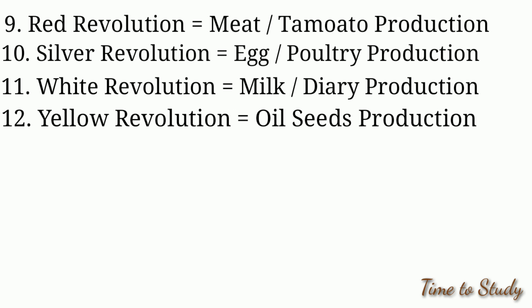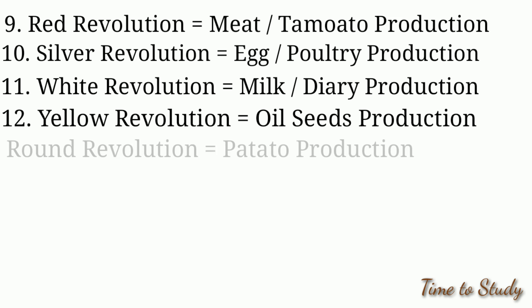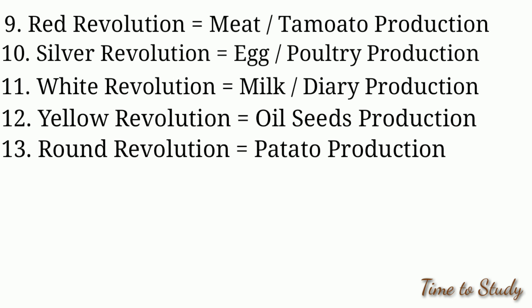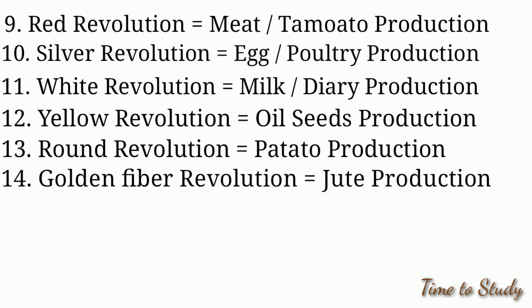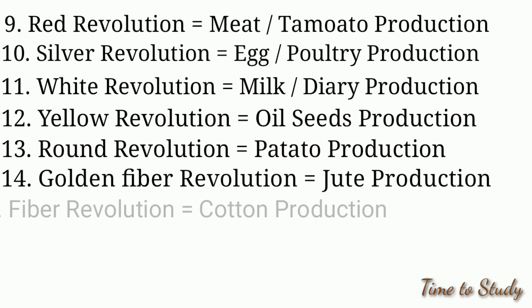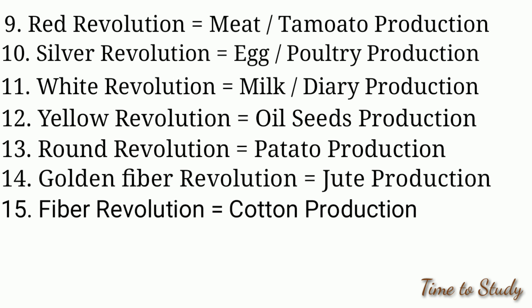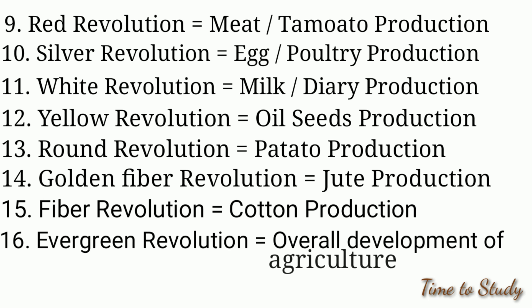Yellow revolution is related to oil seeds production. Round revolution is related to potato production. Golden fiber revolution is related to jute production. Fiber revolution is related to cotton production. Evergreen revolution is related to overall development of agriculture.